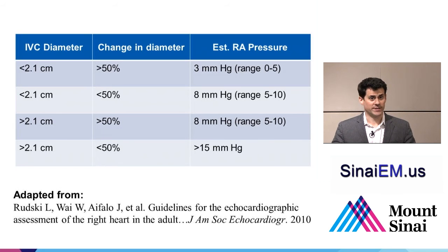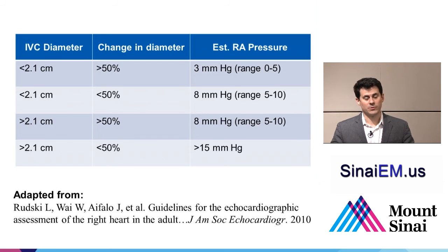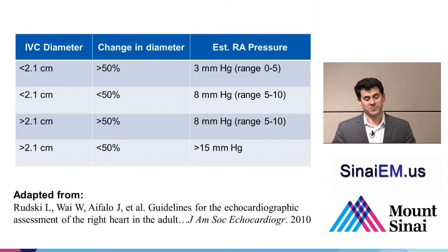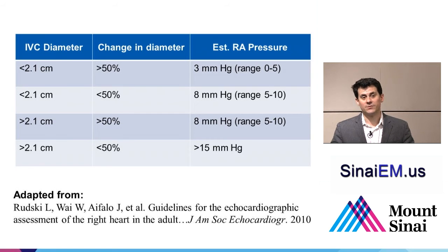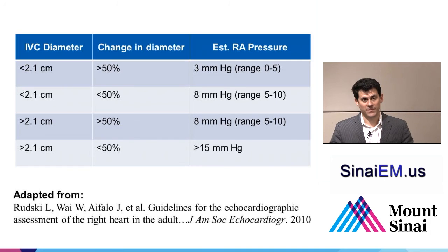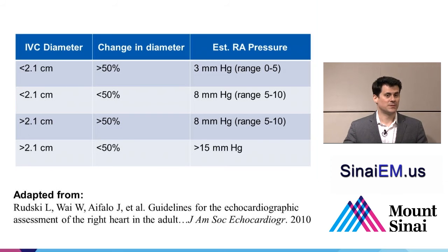Look at contractility together with IVC findings. If you see a hypercontractile heart in a hypotensive tachycardic patient with a small IVC that collapses with respirations, that patient needs fluid. In contrast, a hypotensive tachycardic patient with poor cardiac contractility and a large IVC not changing with respirations is probably not going to respond to fluids and more likely needs inotropic support.